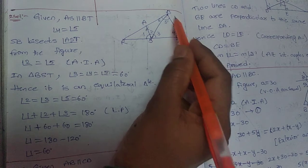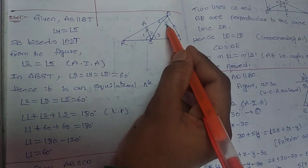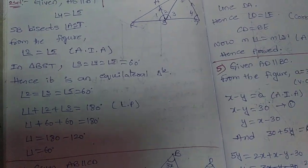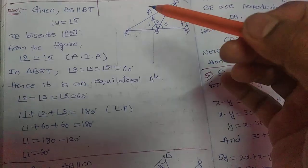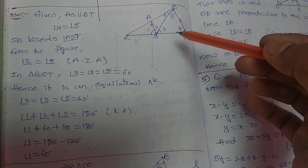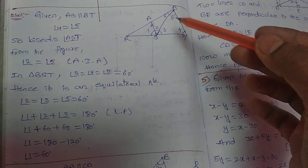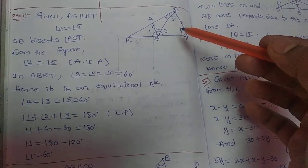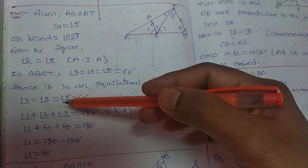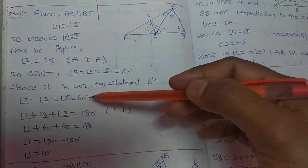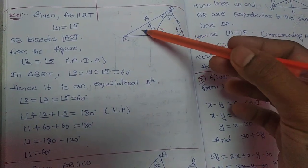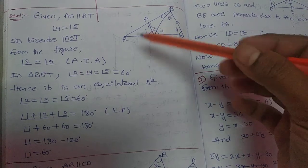In triangle BST, angle 3, angle 4, and angle 5 — all are 60 degrees. All angles are 60 degrees. So angle 3 and angle 5 are equal to 60 degrees. We need to find angle 1.